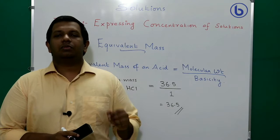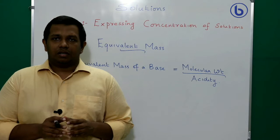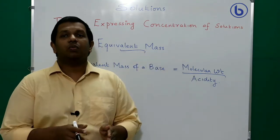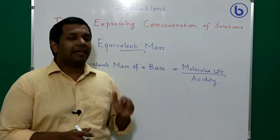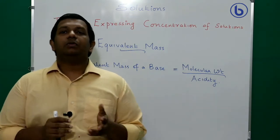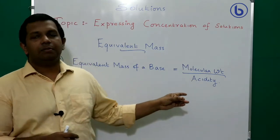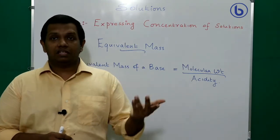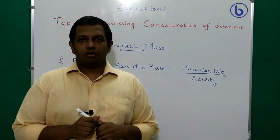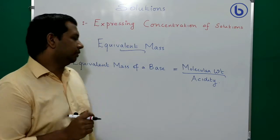Next, the equivalent mass of a base. The formula is: equivalent mass of a base = molecular weight ÷ acidity. For a base, acidity means the number of donatable OH⁻ ions in a particular compound. We will calculate equivalent mass for some bases to understand this clearly.